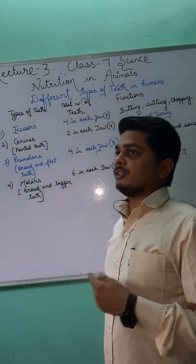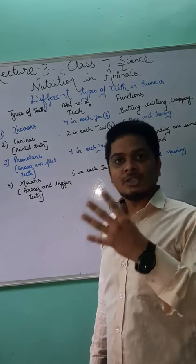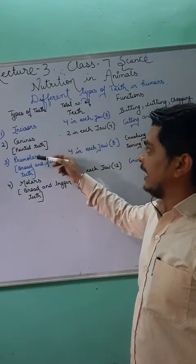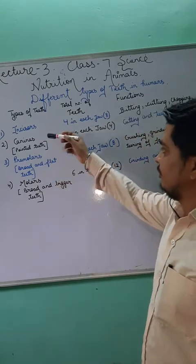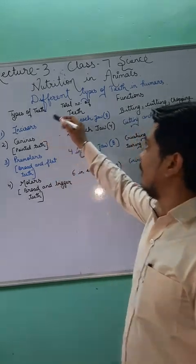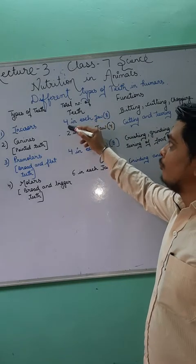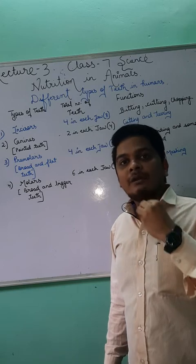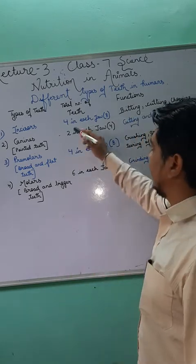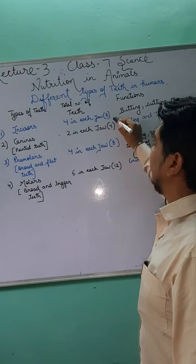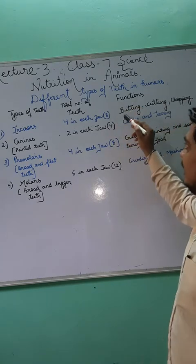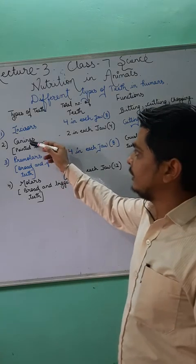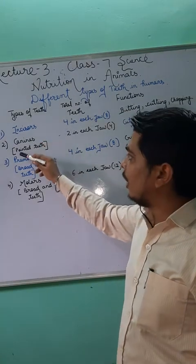Based on structure and function, teeth are characterized into four parts: incisor, canine, premolar, and molar. Starting with the incisor — the total number of incisor teeth is four in each jaw, meaning four in the upper jaw and four in the lower jaw, combining to eight incisors in total. The function of the incisor is biting, cutting, and chopping.